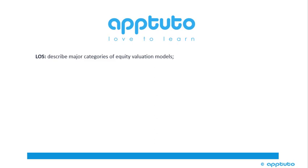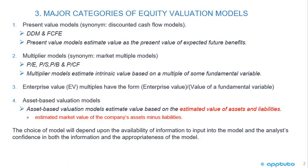This LOS describes the major categories of equity valuation models. We're going to look at four major categories. The first is present value models, synonym discounted cash flow models. This includes the dividend discount model and the free cash flow to equity model. Present value models estimate value as the present value of expected future benefits. This LOS is just the definitions — we'll see more on DDM and FCFE later.